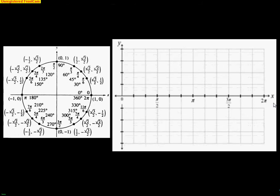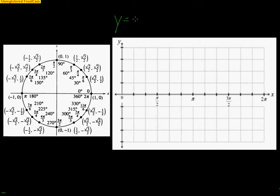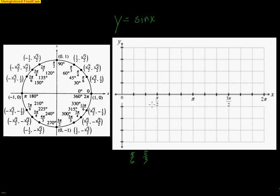Let's show how we're going to make a graph of y equals sine of x. On the left I have my unit circle, because the output values come from that unit circle. On the right I have an actual xy coordinate grid where the x-axis is in angles — every mark represents pi over 6. So here's pi over 6, pi over 3, pi over 2, and so forth.